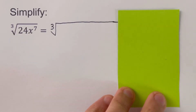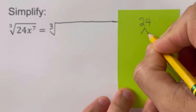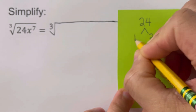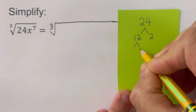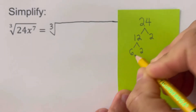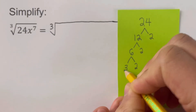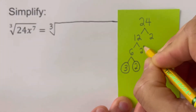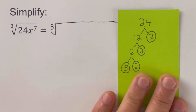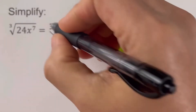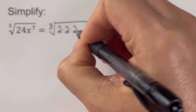To find the prime factors, we divide 24 by 2, giving 2 times 12. Then 12 divided by 2 is 2 times 6. And 6 divided by 2 is 2 times 3. So the prime factors of 24 are 2 times 2 times 2 times 3 — three 2s and a 3.